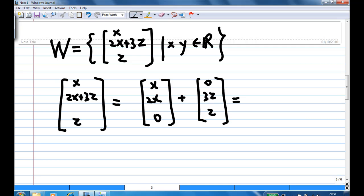So it can be written as the sum of these two vectors. Now, factor out the x in the first vector, you get 1, 2, 0, x. Factor out the z in the second vector, you get z, 0, 3, 1.